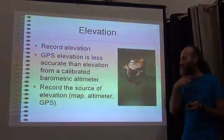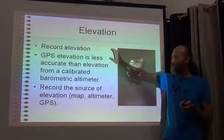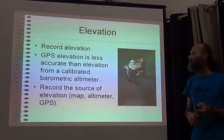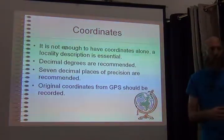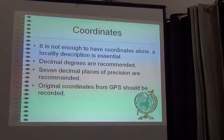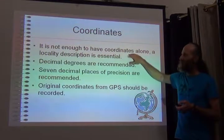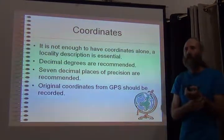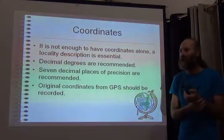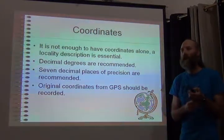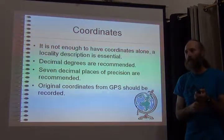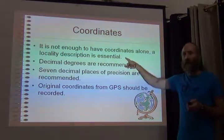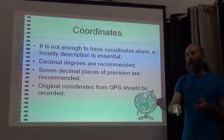Record the source of your elevation, because it can vary so much — it's a good idea to say whether it came from a map, an altimeter, or the GPS. About coordinates: you might think that coordinates can be very specific, succinct, and accurate — isn't that just the best possible locality description? The answer is: if you can trust it, yes. But if you have a descriptive locality like what we just wrote down on paper, then you have a way to check those coordinates.